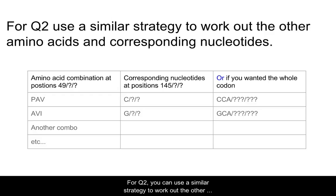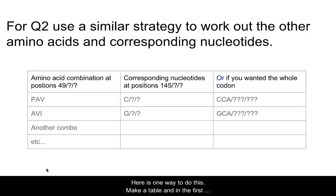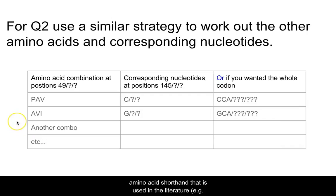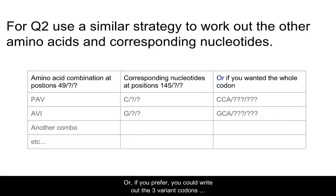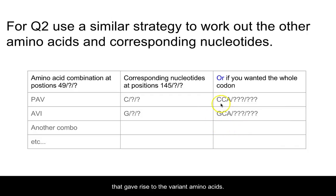For question 2, you can use a similar strategy to work out the amino acid and nucleotide differences at all the positions that vary between the two alleles. Here is one way to do this: make a table and in the first column write out the different possible alleles using the three amino acid shorthand used in the literature — for example, PAV. Keep in mind that these three amino acids are not contiguous in the protein sequence. In the next column, identify the variant nucleotides that led to the variant amino acids, or if you prefer, write out the three variant codons that give rise to the amino acids.